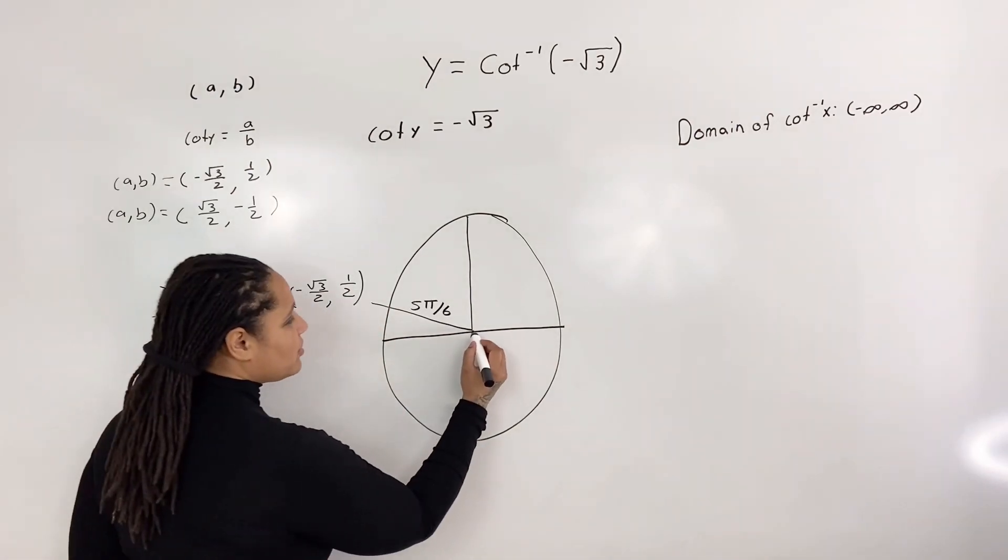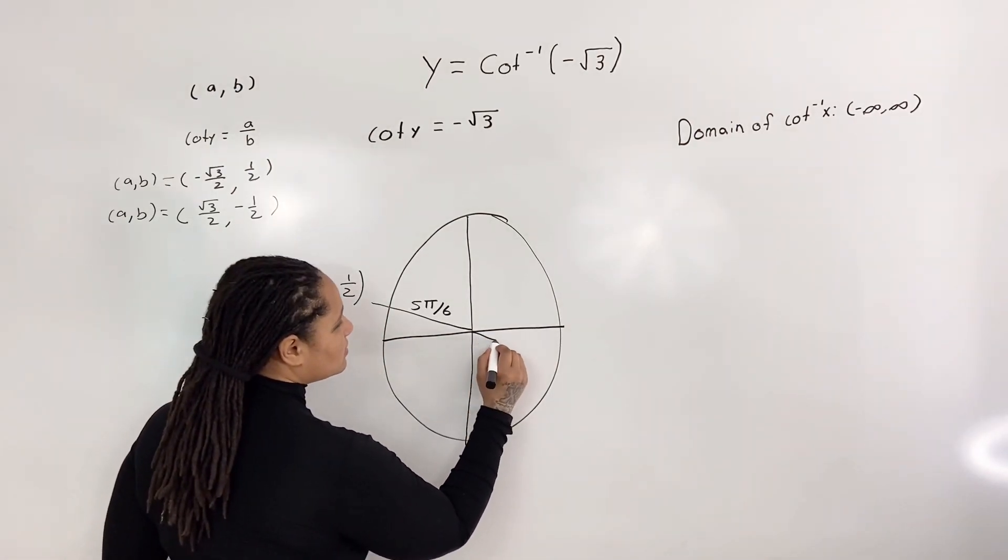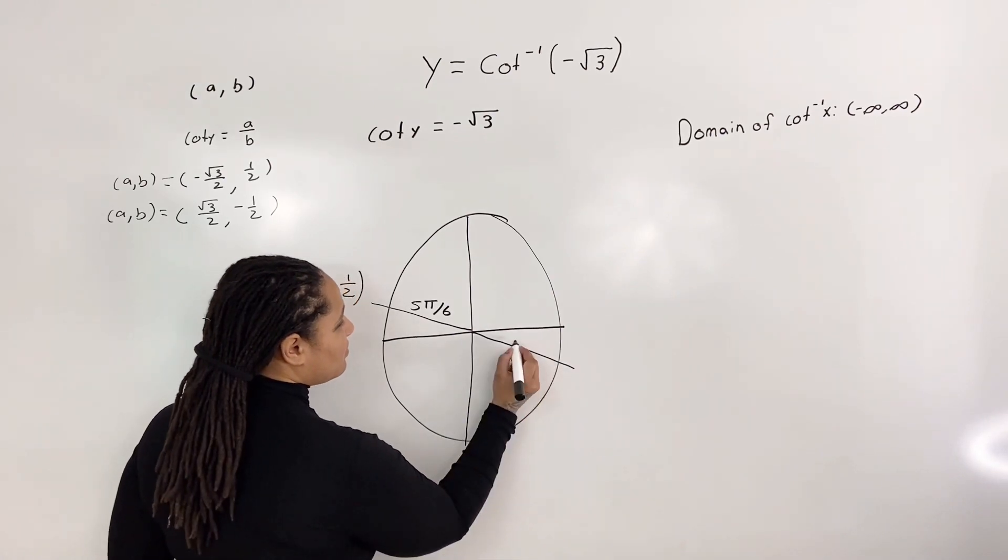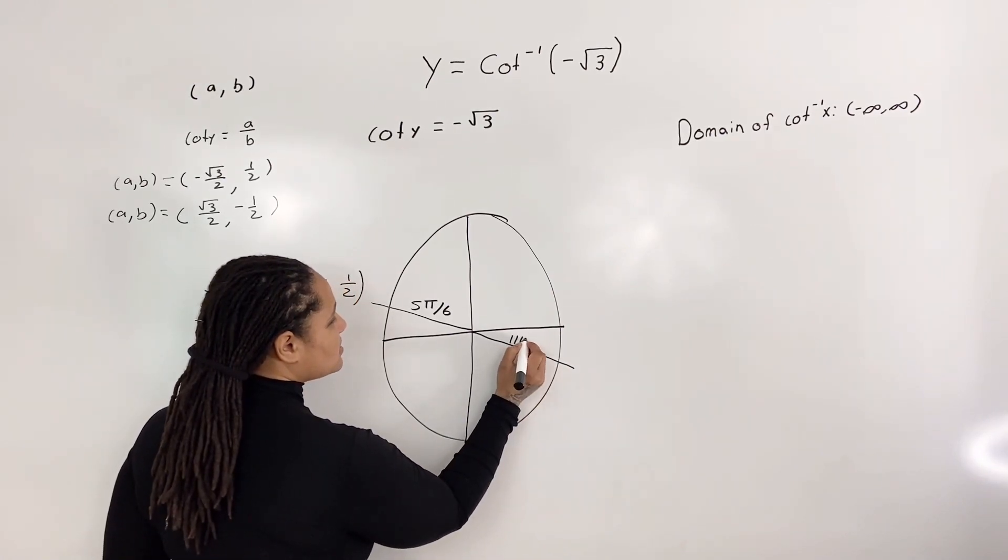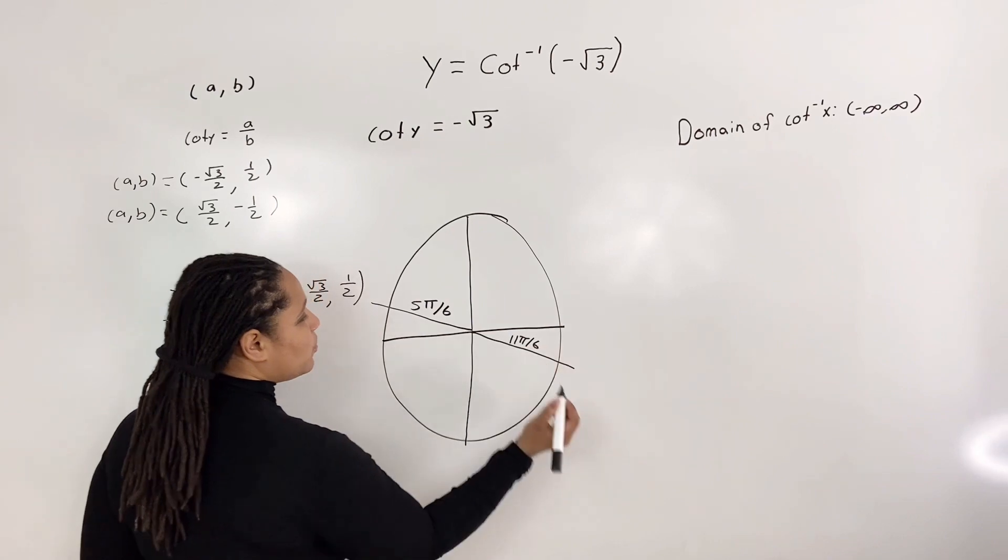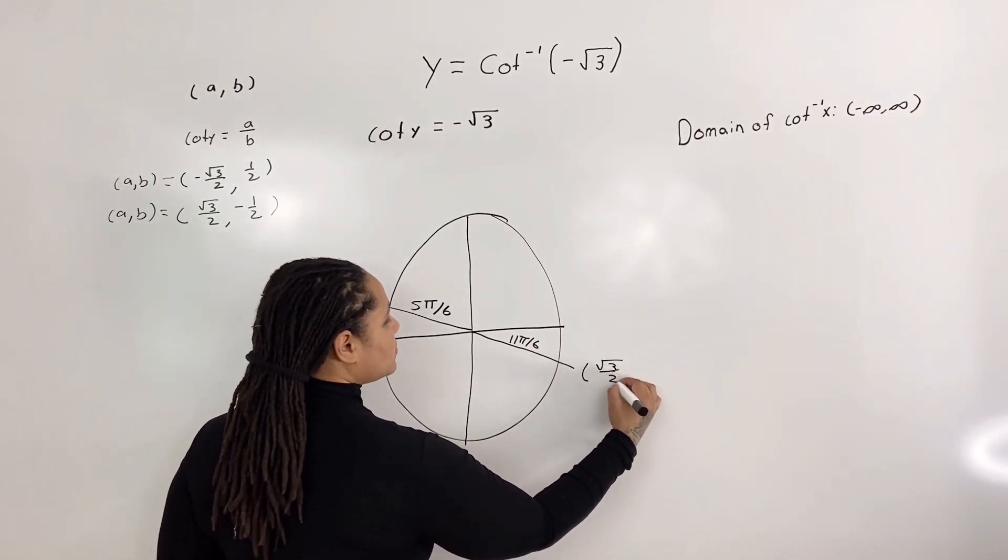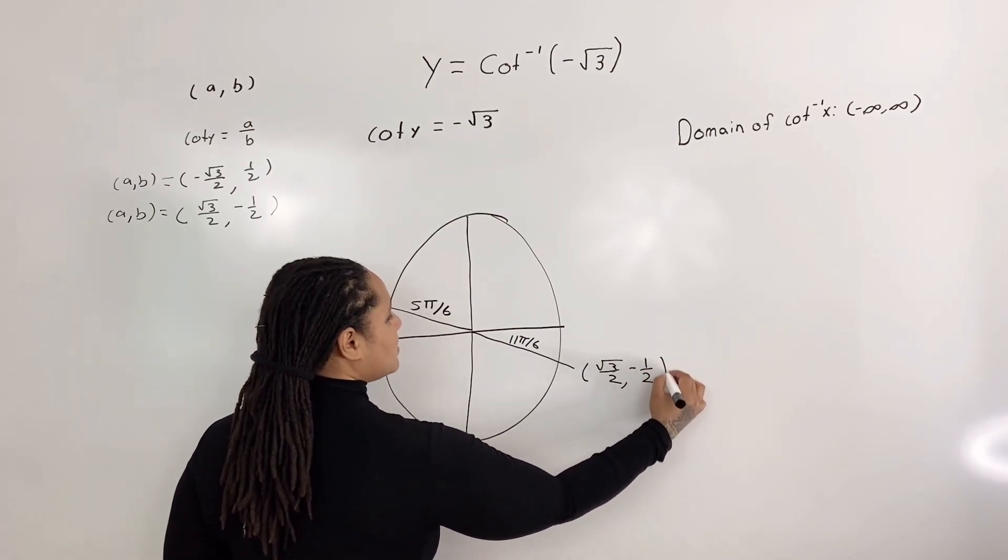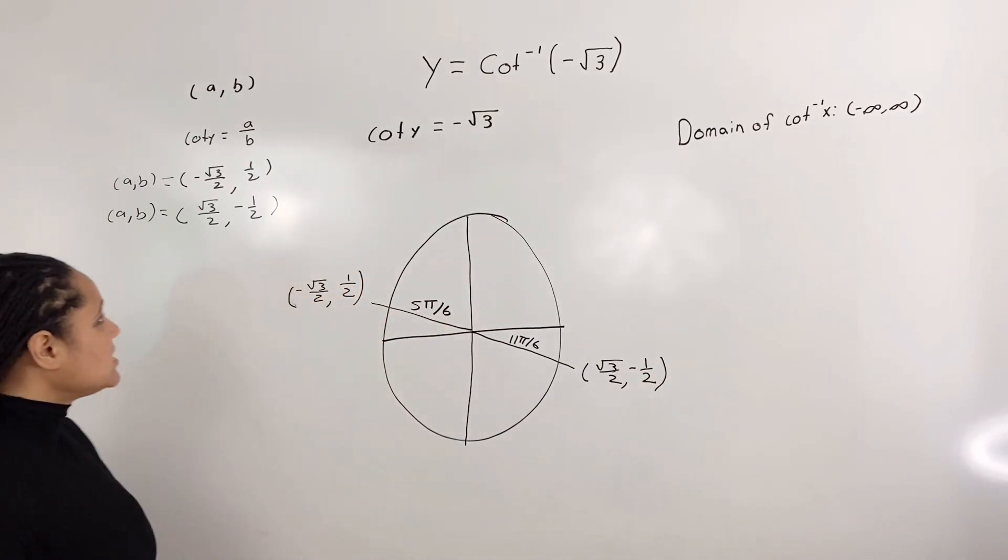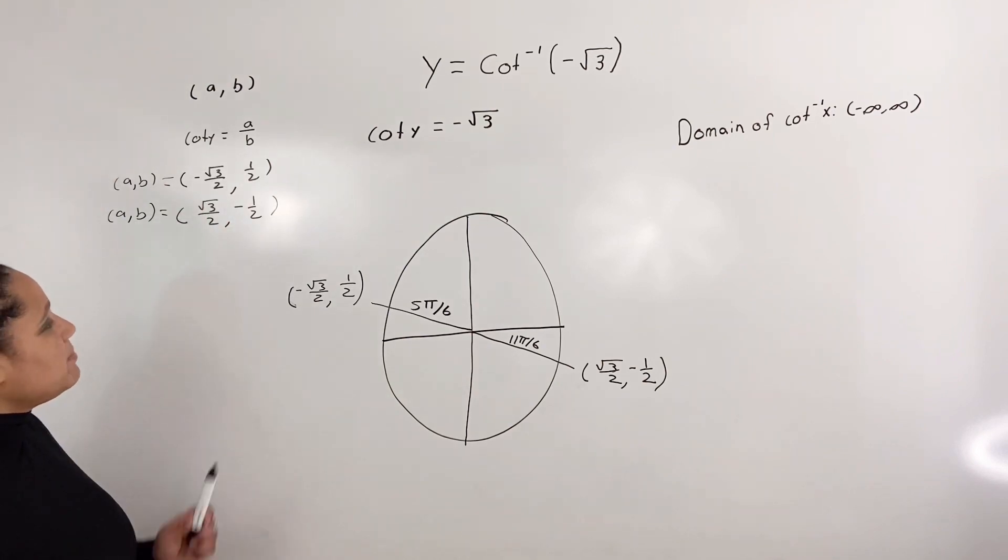And in the fourth quadrant, we have 11 pi over 6 with coordinates root 3 over 2, negative 1 half. And that's what we want.